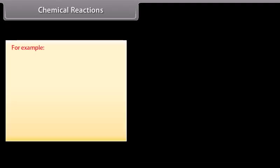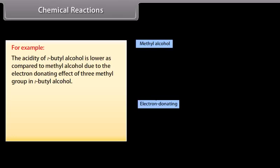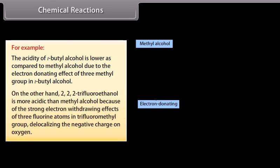For example, the acidity of tert-butyl alcohol is lower as compared to methyl alcohol, due to the electron donating effect of 3 methyl groups in tert-butyl alcohol. On the other hand, 2,2,2-trifluoroethanol is more acidic than methyl alcohol because of the strong electron withdrawing effect of 3 fluorine atoms in the trifluoromethyl group, delocalizing the negative charge on oxygen.